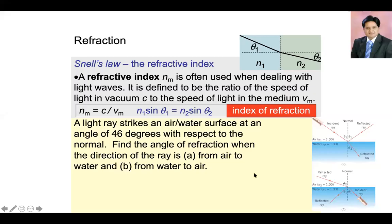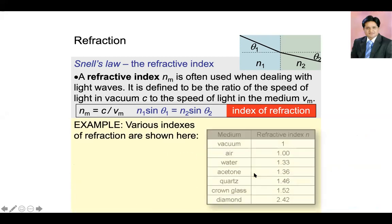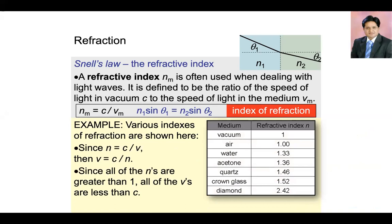Here you have a table of refractive indices. Air has a refractive index of 1, water is 1.33. Diamond has the highest refractive index at 2.42, and that is one reason why diamond shines brilliantly. When light enters inside diamond, it undergoes multiple total internal reflections. We'll cover total internal reflection shortly, but you just need to know what are the refractive indices of different substances.